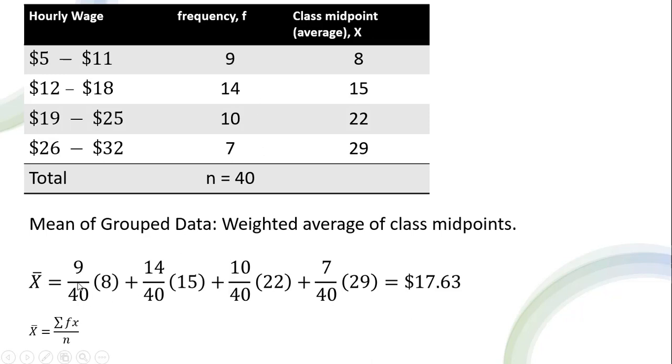So the weighted average here, we got 9 divided by 40 times 8, then 14 divided by 40 times 15, and then 10 divided by 40 times 22, and so on. So we just calculate this weighted average. Adding this up, we get $17.63. So that would be our mean of the grouped data.